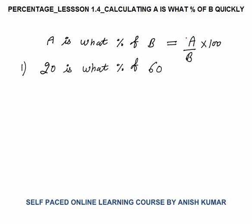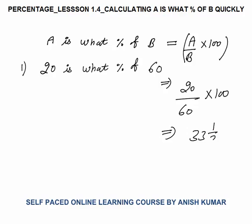For example: 20 is what percent of 60? This will be equal to 20 by 60 multiplied by 100, that is 1 by 3 multiplied by 100, which gives 33⅓ percent. That will be our final answer. So 20 is 33⅓ percent of 60.